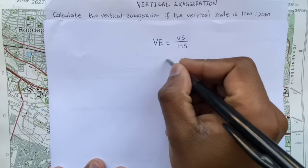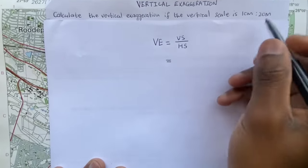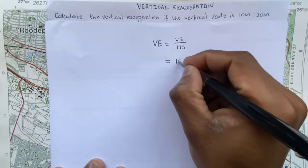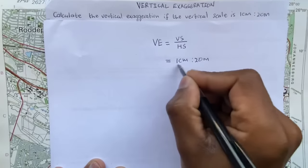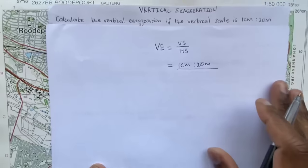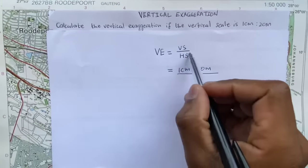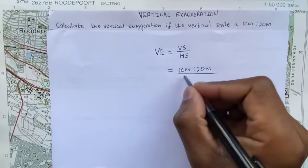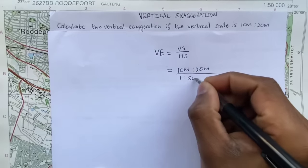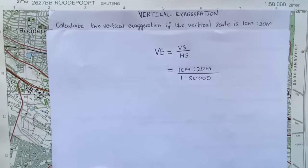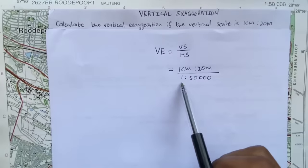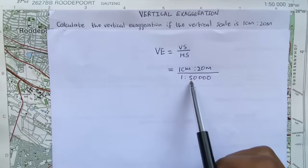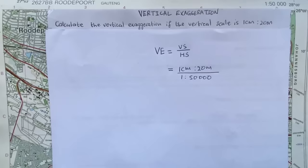So my VS, I'm just gonna write it as is, which is one centimeter represents 20 meters, divided by the scale of the map which is my horizontal scale, which is 1:50,000.